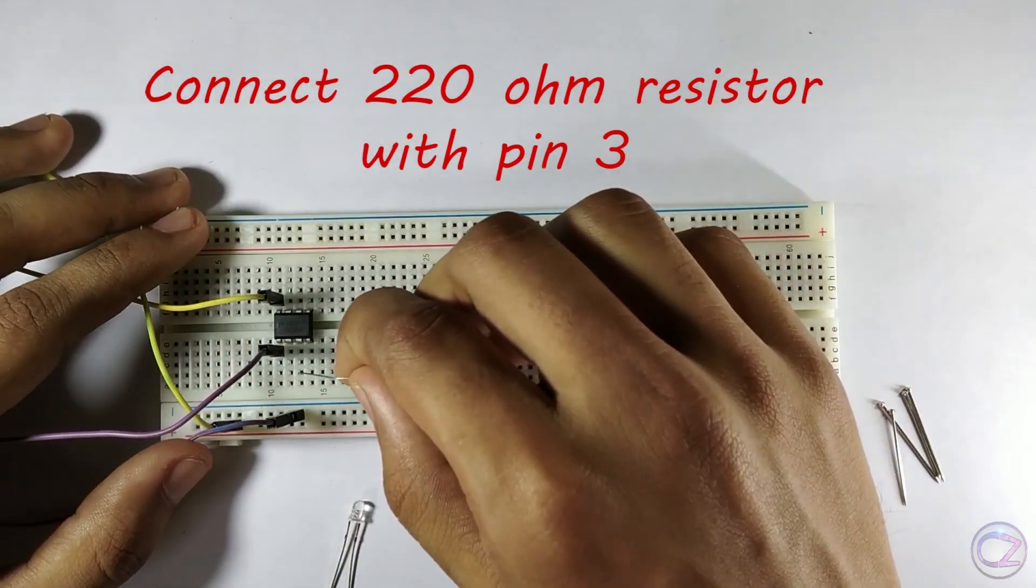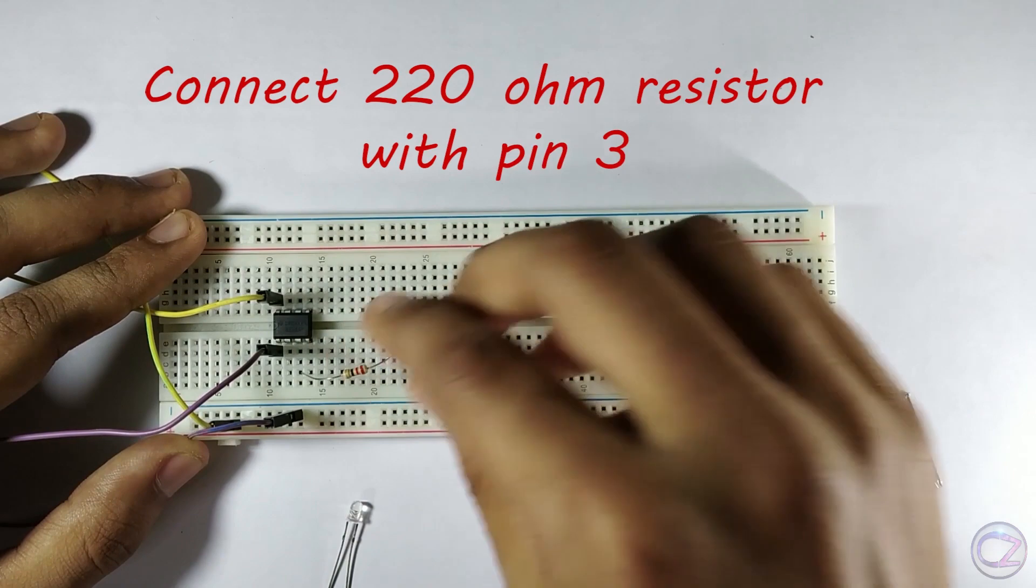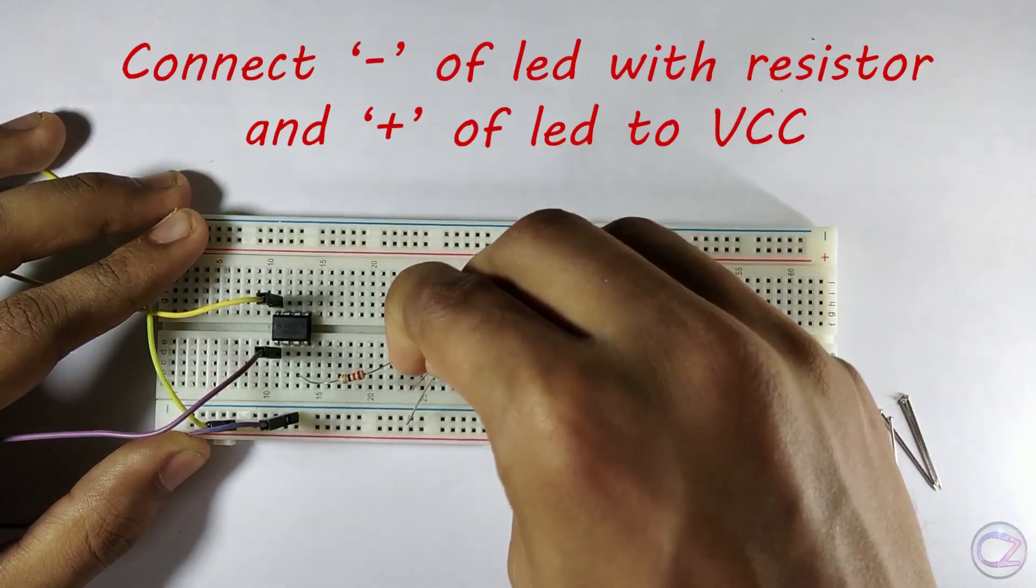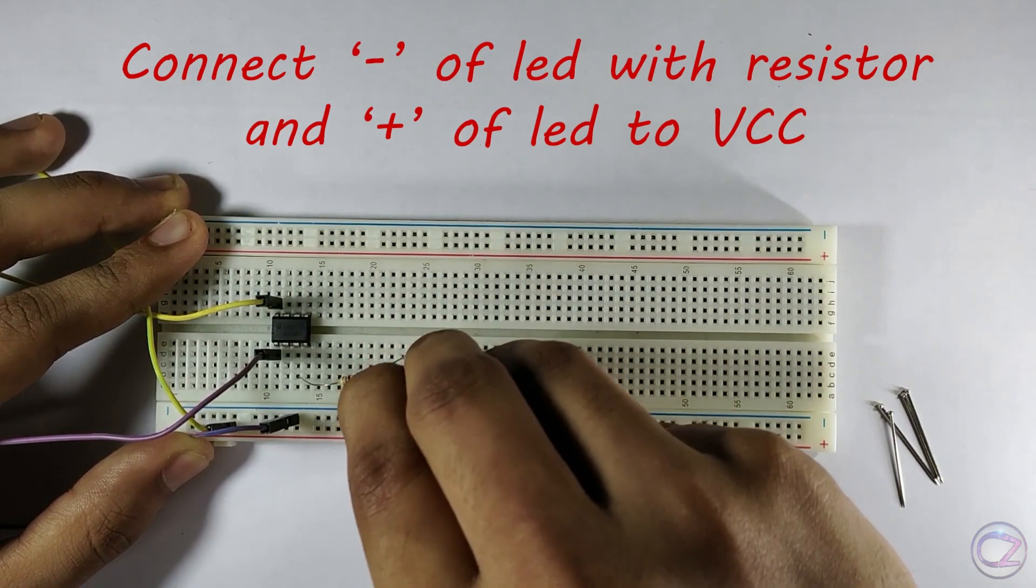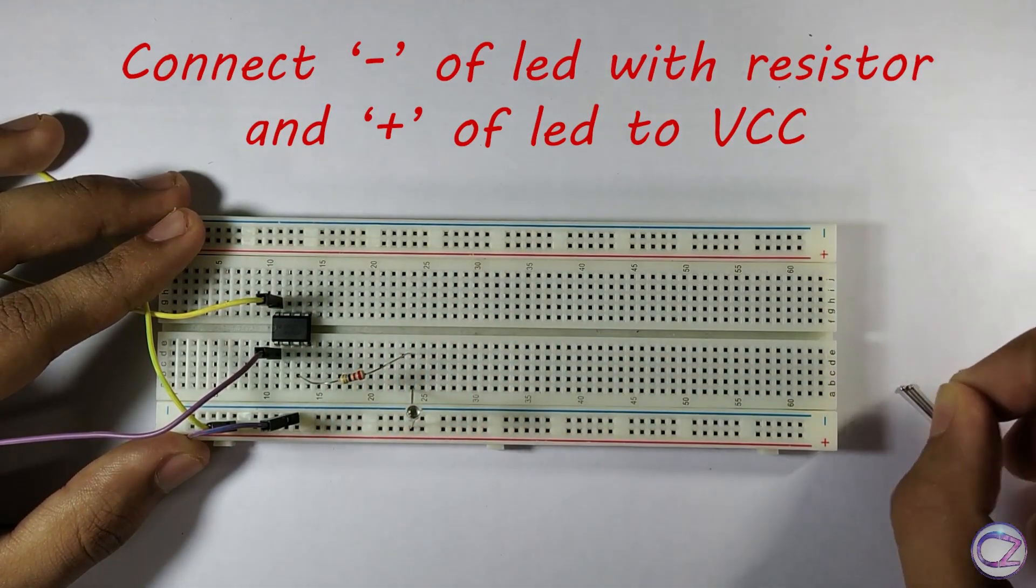Connect any terminal of the 220 ohm resistor with pin 3 and another terminal to an empty point on the breadboard. Now connect the negative terminal of the LED with the resistor and positive terminal of the LED to VCC.